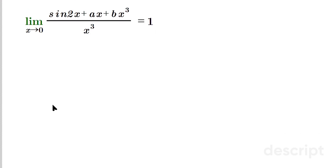Now we have this, what can we do? We gotta somehow get a and b. If you just plug in directly, you would have sine of 2 times 0, then a times 0 plus b times 0 cubed, divided by 0 cubed. This would give us 0 over 0, that's definitely an indeterminate form.